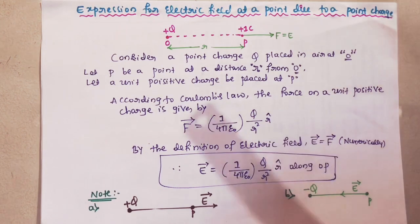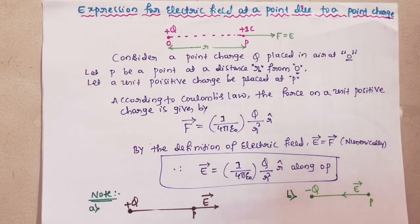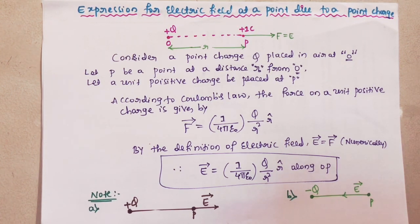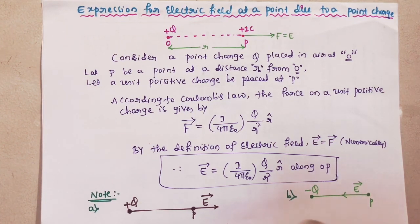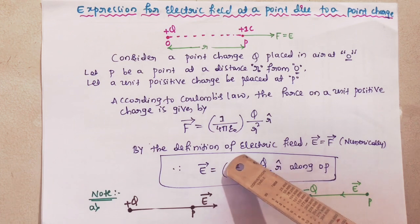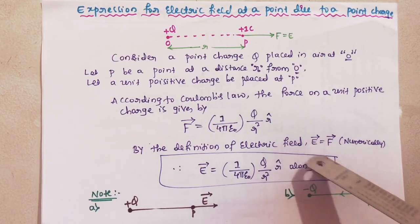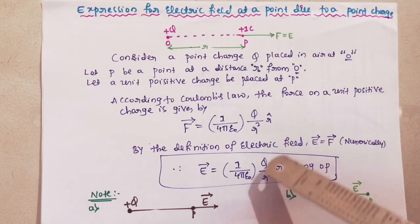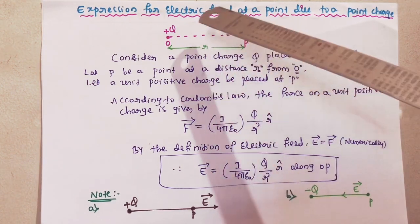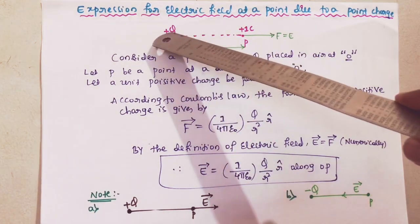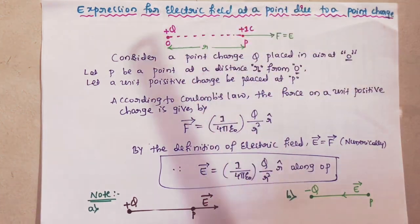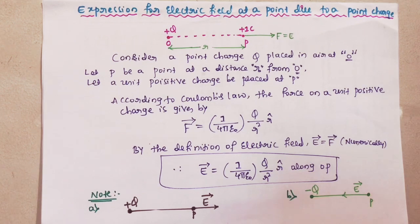By the definition of electric field, E = F/q₀. Substituting, the electric field equation becomes: vector E = (1/4πε₀) × Q/r² × r̂ along OP. This is the expression for electric field at a point due to a point charge, where r is the distance between the point charge and the unit positive charge.